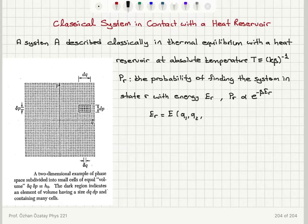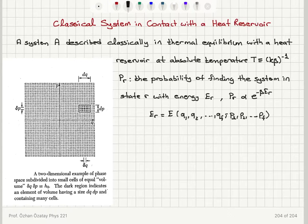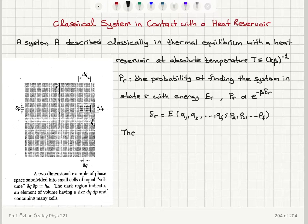This energy E sub r is a function of the coordinates and corresponding momenta of the system. So we have f position coordinates and f corresponding momenta. Now, the related question is this probability density. Because we have continuous variables p and q, we should really talk about the probability density.